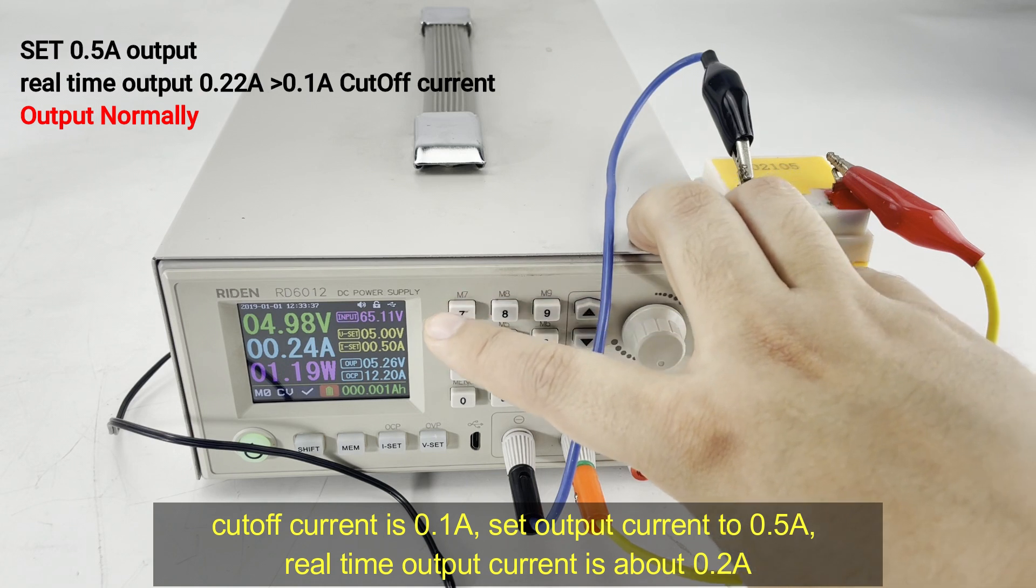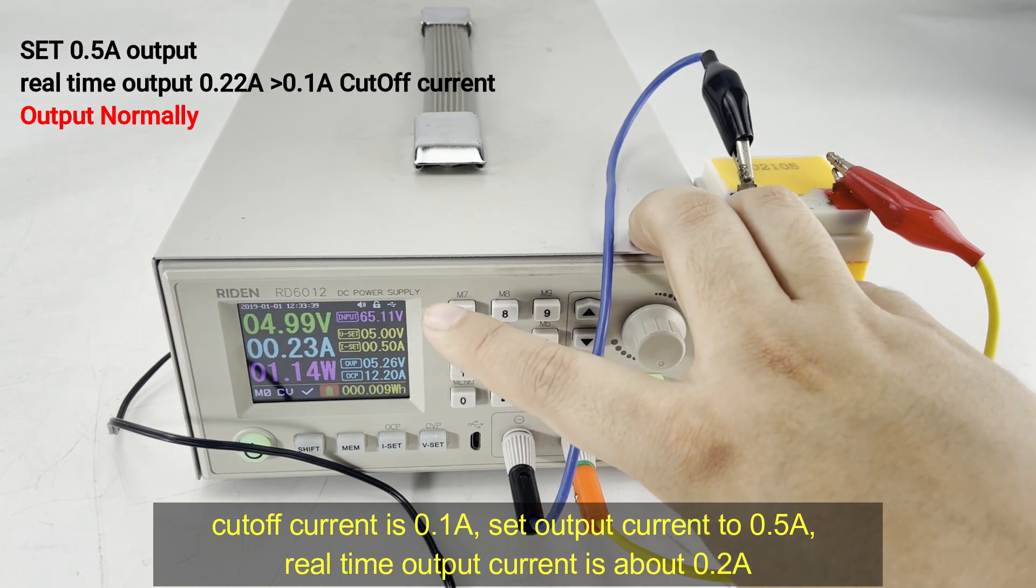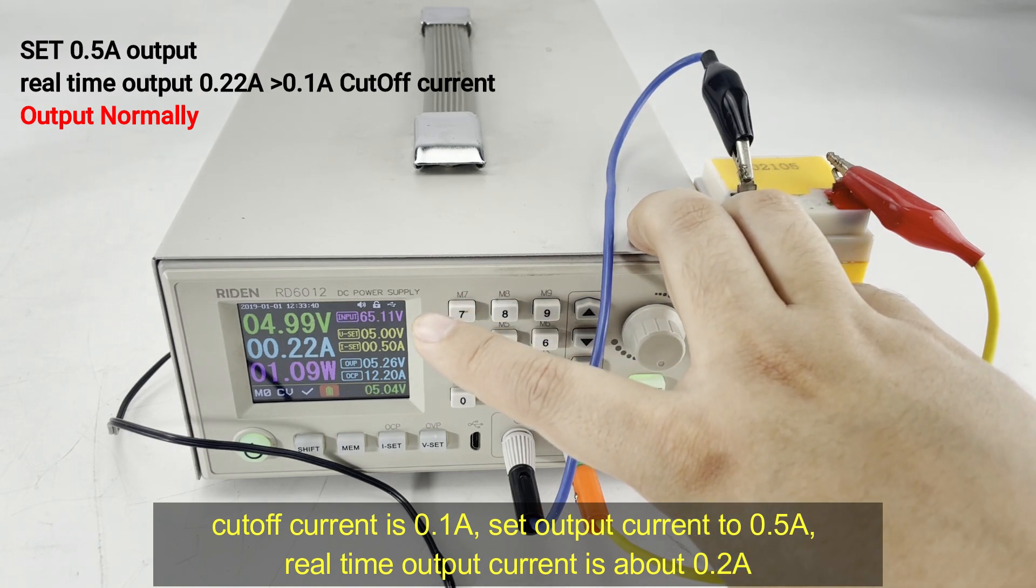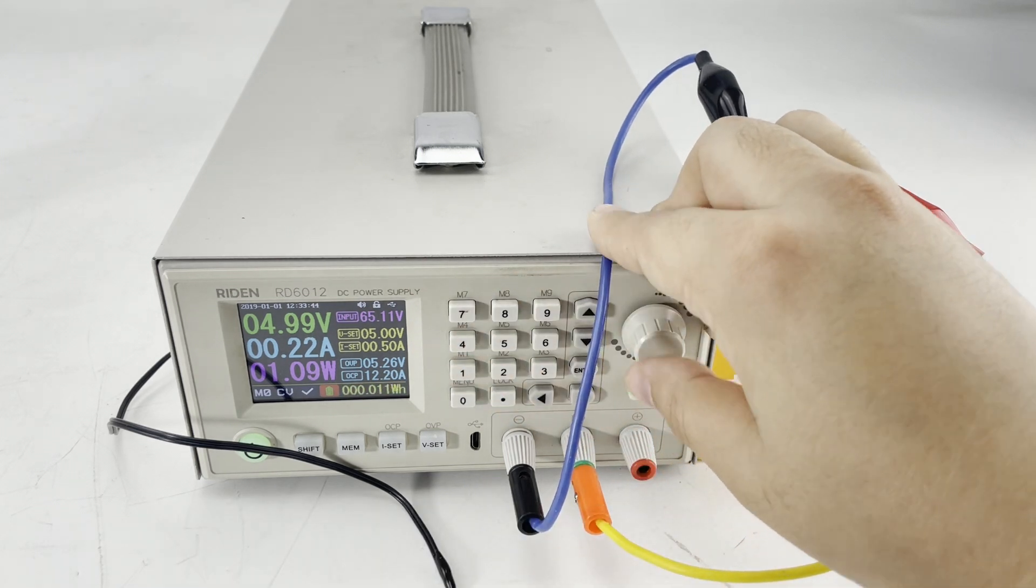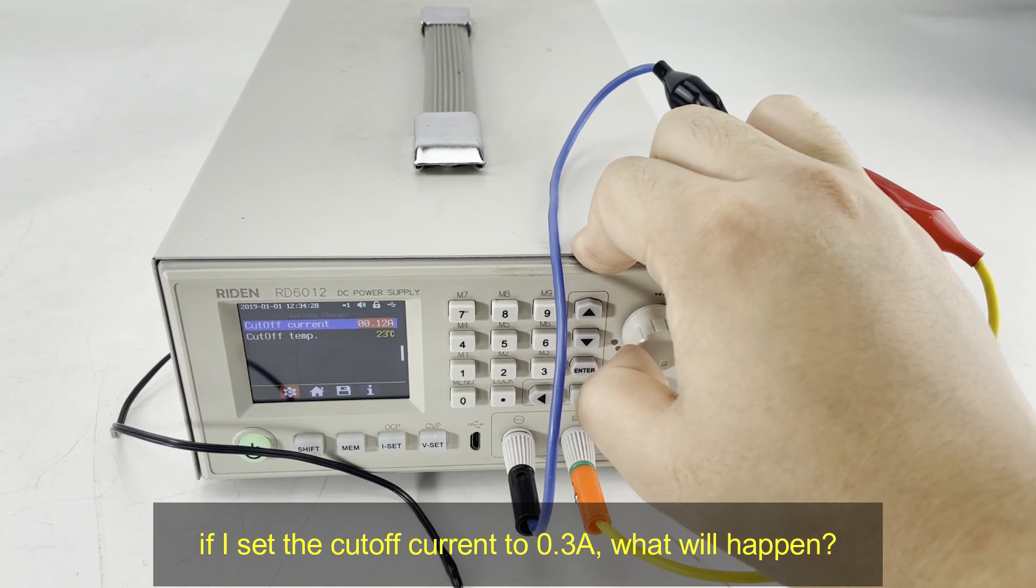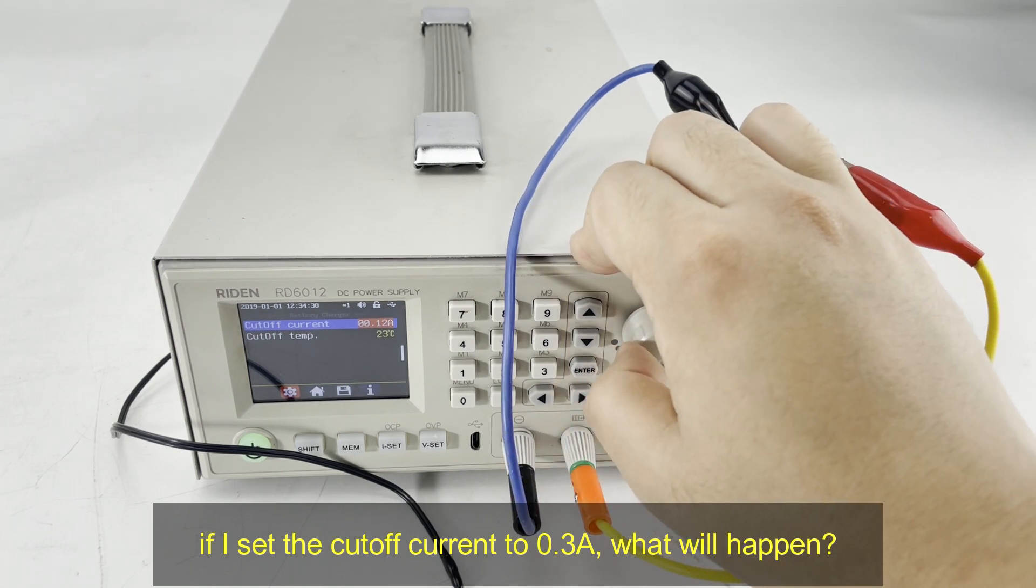The real-time output current is about 0.2 ampere. If I set it to 0.3 ampere, what will happen?